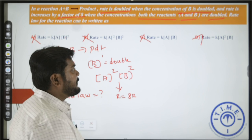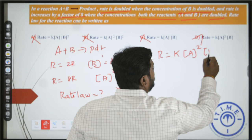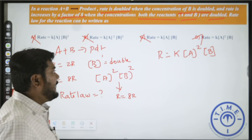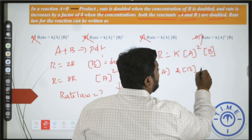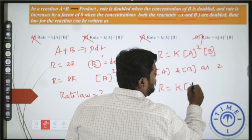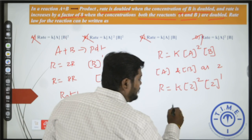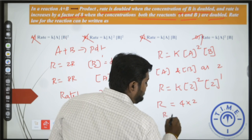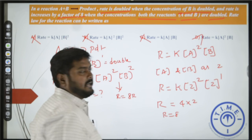So your option will be D. Let's verify: rate = k[A]² × [B]¹. Already we found concentration of B to the power 1. Taking concentration of A and B as 2: R = k × 2² × 2¹ = k × 4 × 2, so rate becomes 8. Hence this is correct — your fourth option is correct.